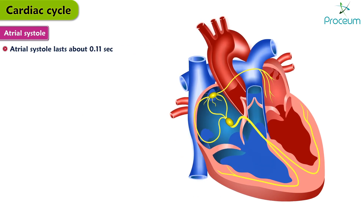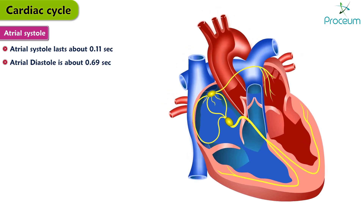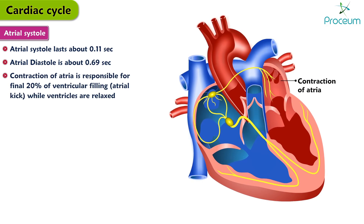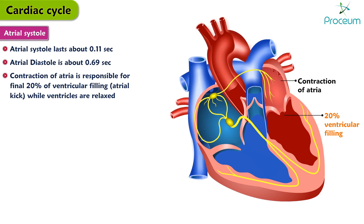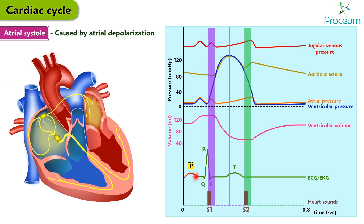Atrial systole lasts about 0.11 seconds and atrial diastole is about 0.69 seconds. Contraction of the atria is responsible for the final 20% of ventricular filling, called the atrial kick, while the ventricles are relaxed. Depolarization of the SA node causes atrial depolarization, marked by the P wave on the EKG, before the beginning of atrial systole, thereby triggering atrial muscle contraction. Atrial depolarization causes atrial systole and as the atria contract, left atrial pressure increases, causing the A wave on jugular venous pulse.